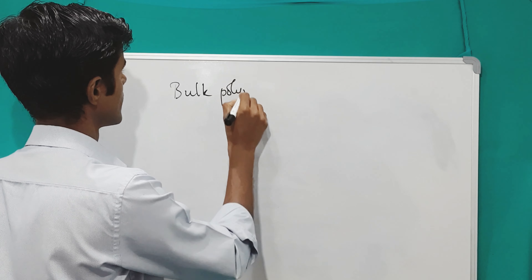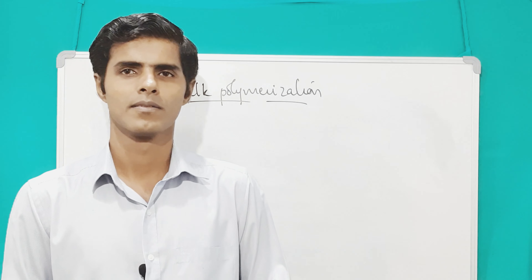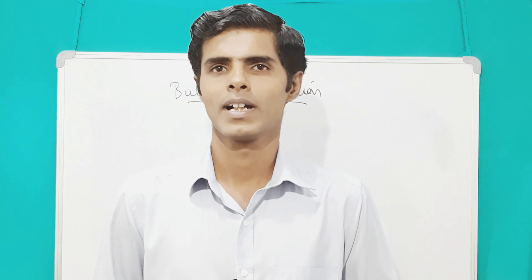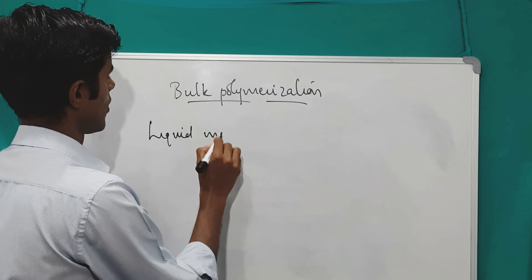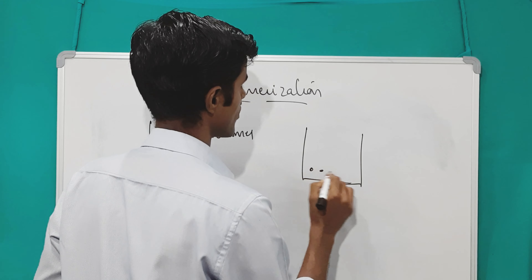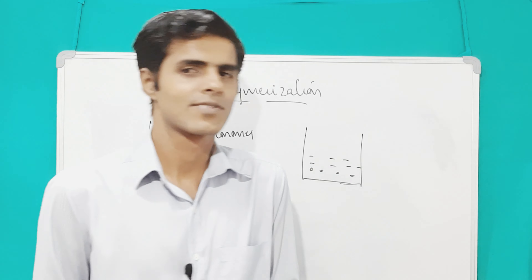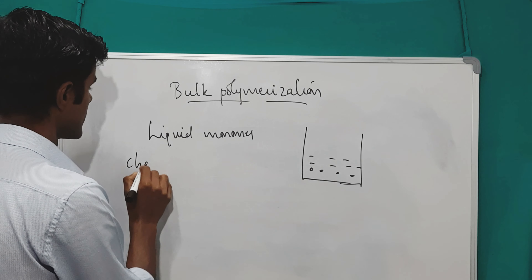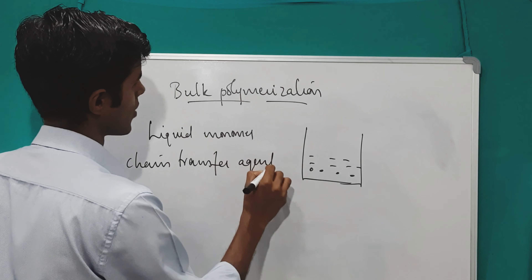Bulk polymerization is one of the techniques most used to synthesize polymers. In this technique, liquid monomer is used — that is a specialty of bulk polymerization. Liquid monomer is added, and we will be dissolving a chain transfer agent into the liquid monomer.